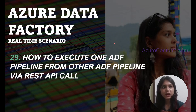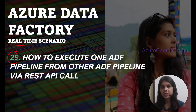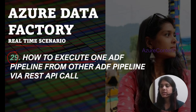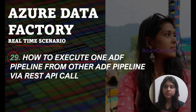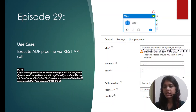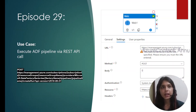Hi friends, welcome to Azure Content. This is part 29 in the Azure Data Factory real-time scenarios playlist. In this video we are going to learn how to execute one ADF pipeline from another ADF pipeline via REST API call. Let's see the requirement in detail — we will run an ADF pipeline with the help of a REST API endpoint.